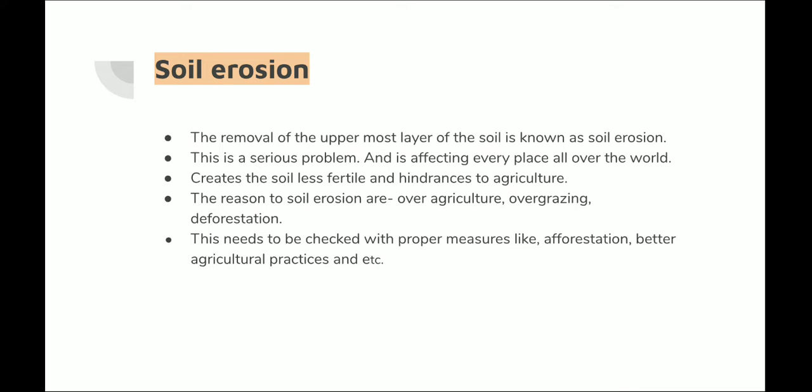Now we will talk about soil erosion. Soil erosion is the removal of the upper layer of the soil — it is a serious problem. It is the movement of the top layer of soil from one place to another. Soil erosion does one useful thing: it sometimes changes a highland to a plateau and helps in the formation of a plain. But apart from that, everything soil erosion does is bad — it makes the soil less fertile and creates problems in agriculture. The reasons for soil erosion are over-agriculture, overgrazing, and deforestation.